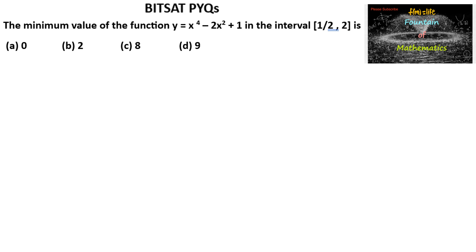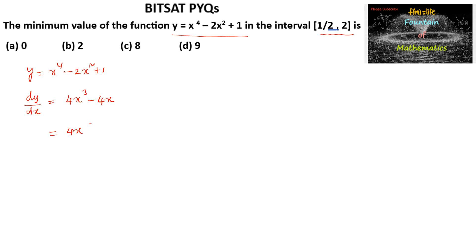We need to find the minimum value of the function y = x⁴ - 2x² + 1 in the interval [1/2, 2]. So let's differentiate with respect to x. We have dy/dx = 4x³ - 4x, and we can take 4x common to get 4x(x² - 1), which factors as 4x(x + 1)(x - 1).